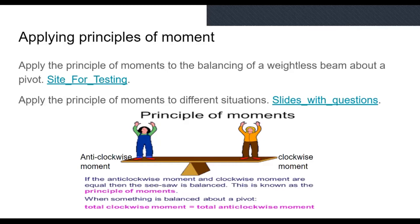Principles of Moment. So we have two people here, right? They're balancing because the clockwise moment and the anti-clockwise moment are equal. This is known as the Principle of Moments. When something is balanced about the pivot, total clockwise moment equals total anti-clockwise moment. You just have to remember that.